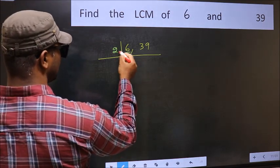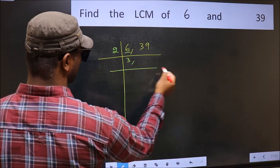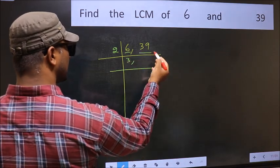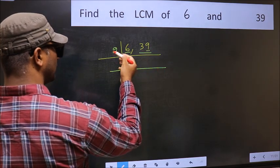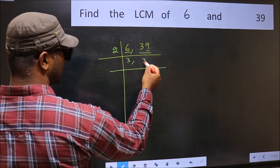6 is 2 times 3, so we get 3. The other number 39, last digit 9 is not even, so this is not divisible by 2. So you write it down as it is.